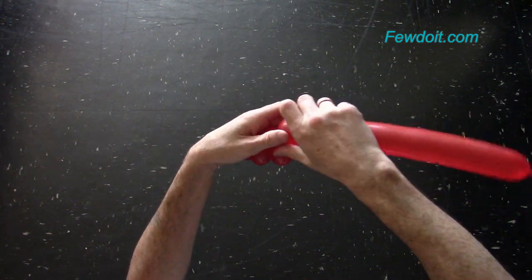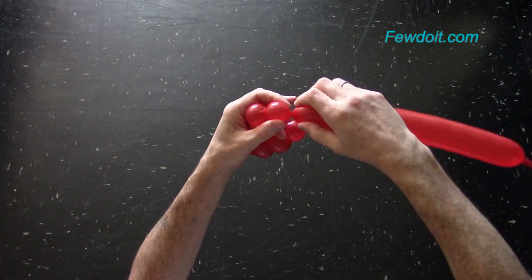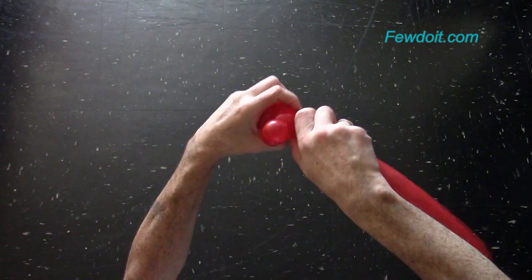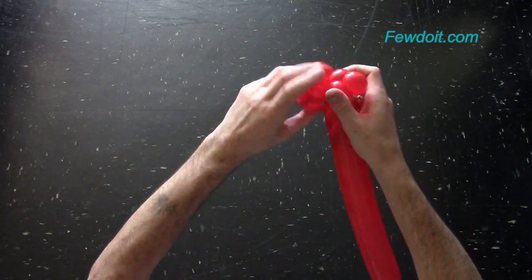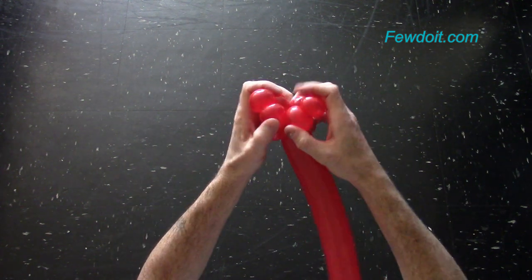This sculpture is just a variation of basic five petals flower. Instead of making one bubble for each petal, we are making three bubbles for each petal. Here we have made the third section or third petal if you wish.